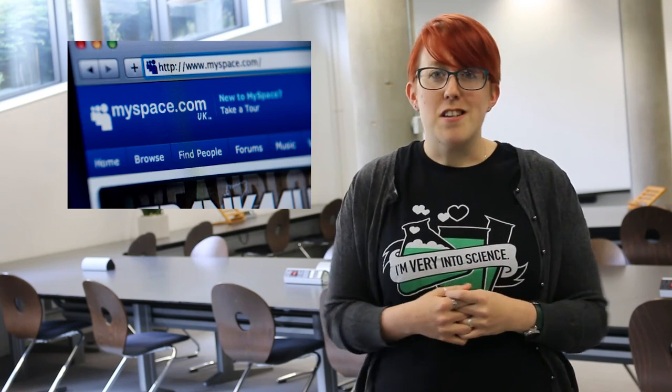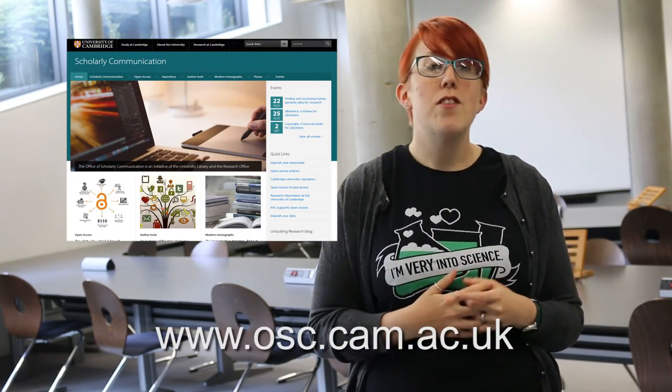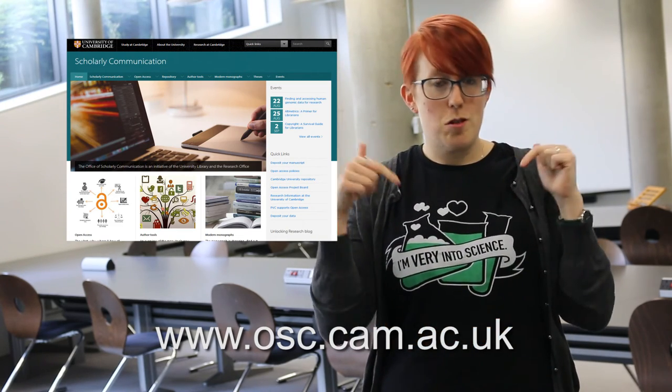Once you've sorted out any rogue accounts that you'd forgotten about and made that old MySpace page a bit more private, you can now start developing your professional online identity. There are lots of excellent services out there, some of which we will explore in other videos and they will help you build a professional presence online with relatively little effort. To get a better idea of what is out there check out the University of Cambridge's Office of Scholarly Communications website which we've linked to in the description below.